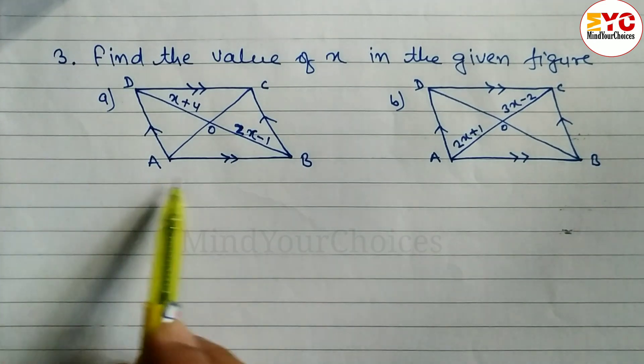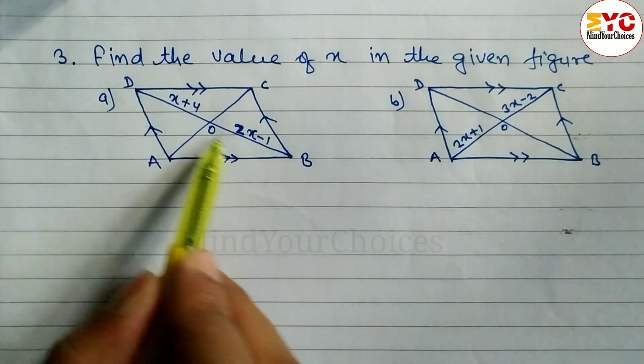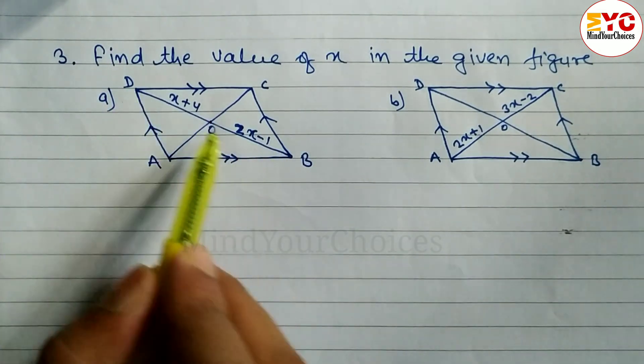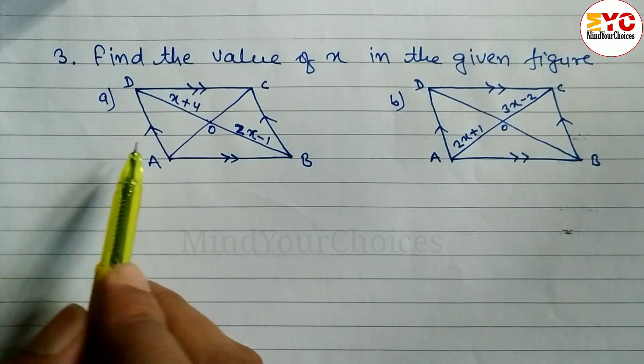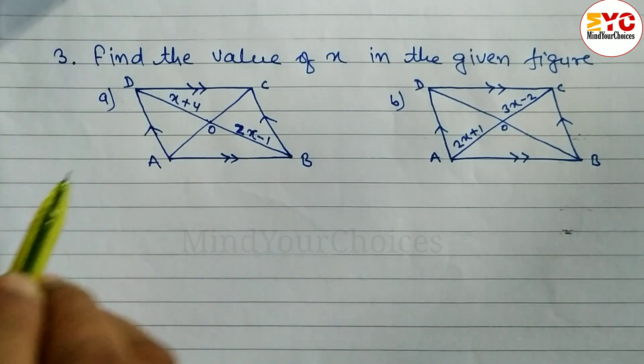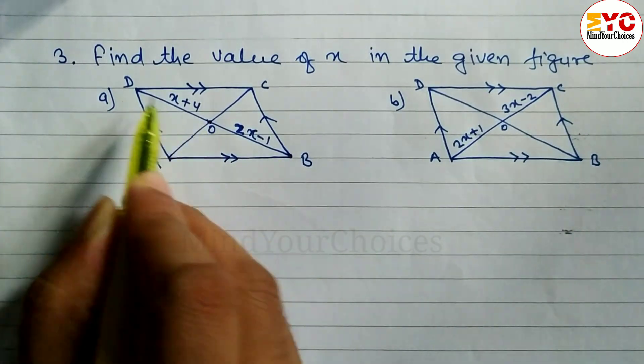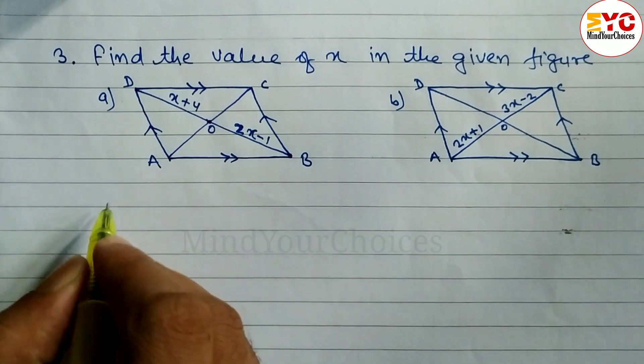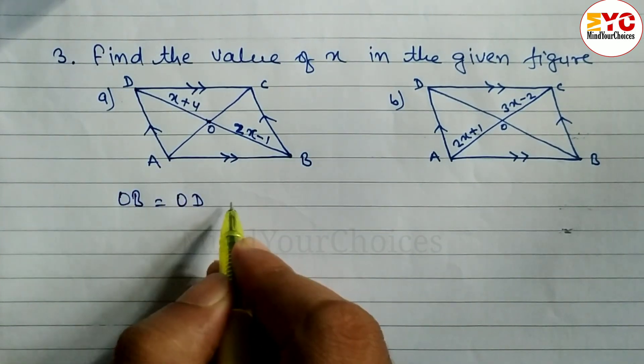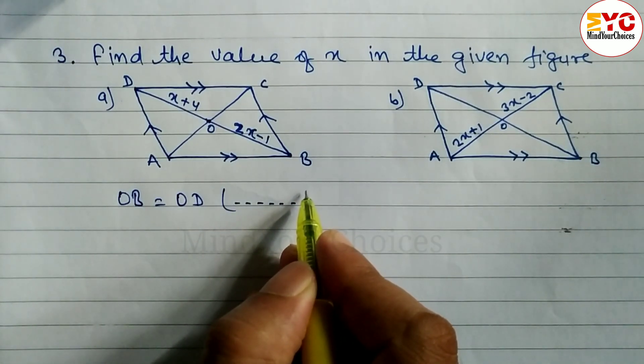So you can see here this is a parallelogram. ABCD is a parallelogram, and diagonals are given here, OD and OB. The value of OB and OD is given. We know that in a parallelogram, diagonals always bisect each other. Bisect each other means OB and OD both are equal. So we can write here OB is equal to OD. The reason we have to write down: diagonals bisect each other.